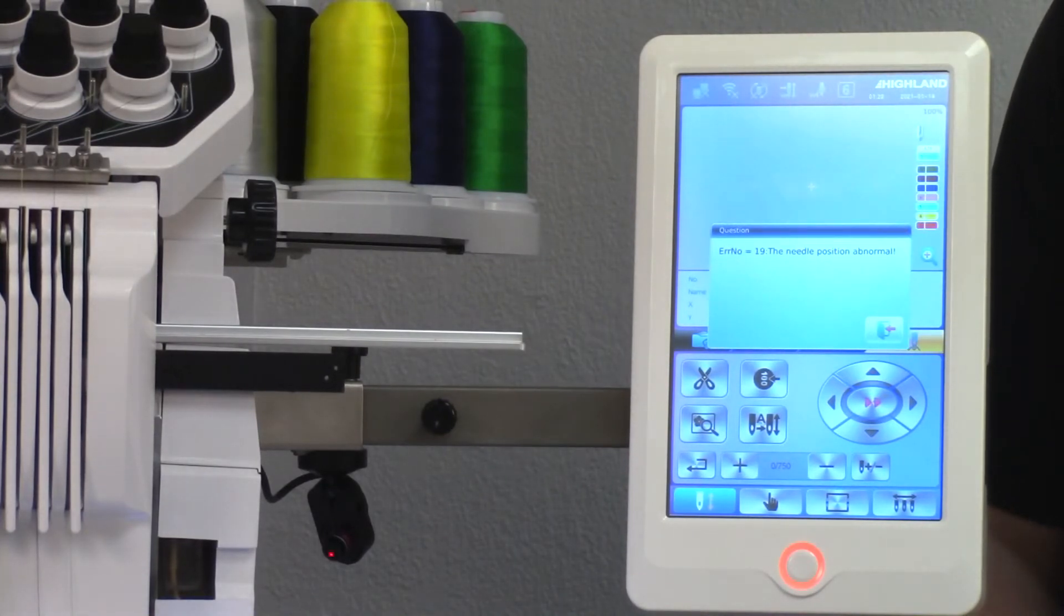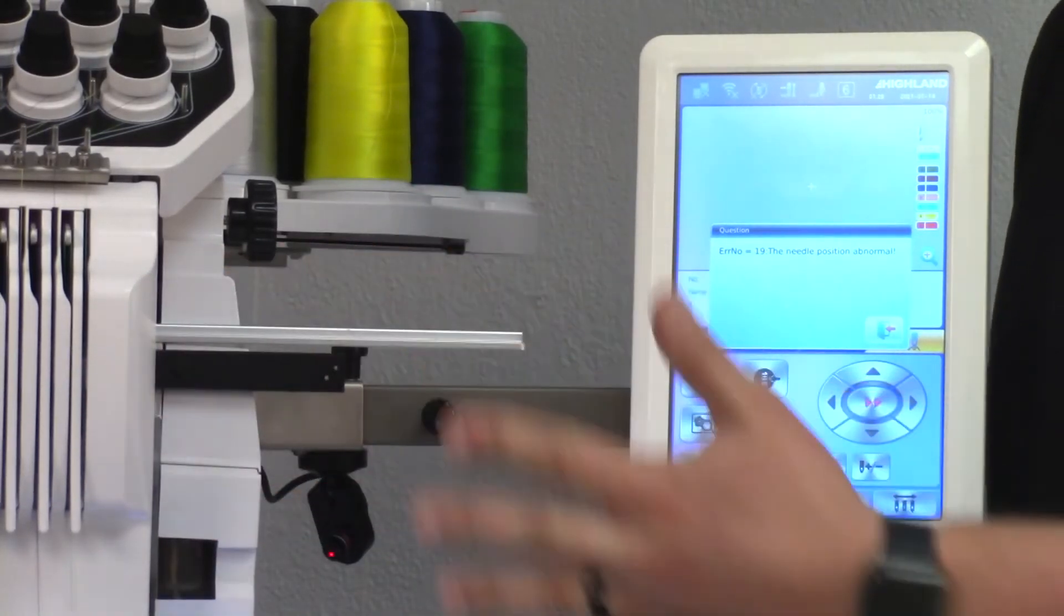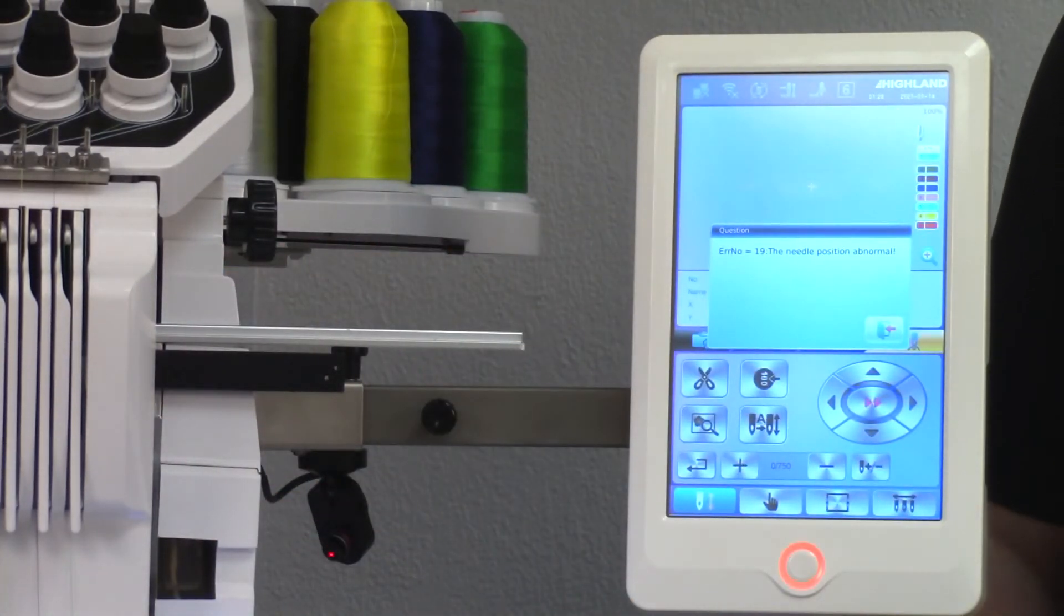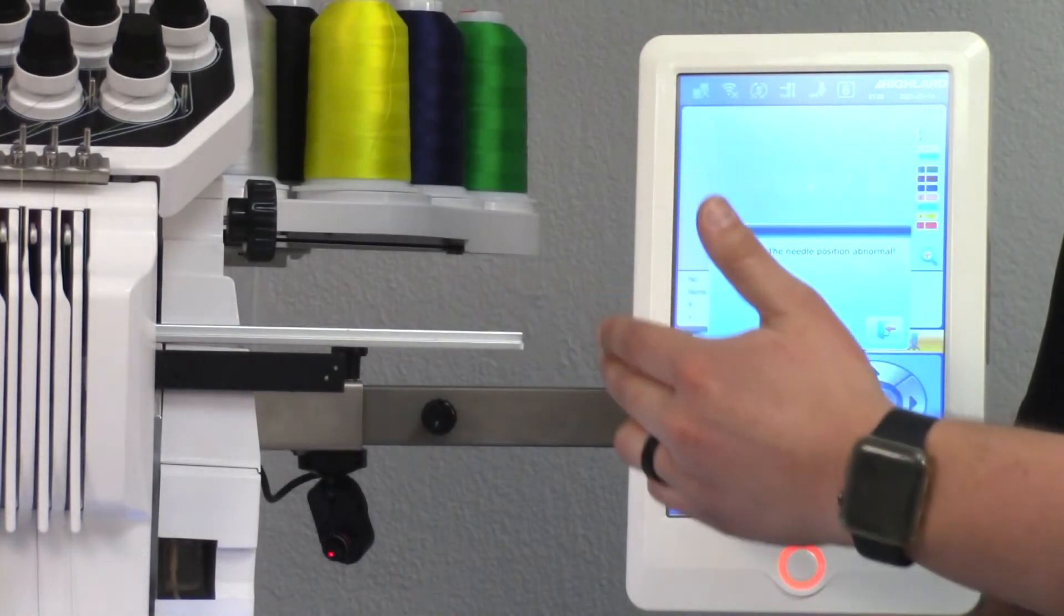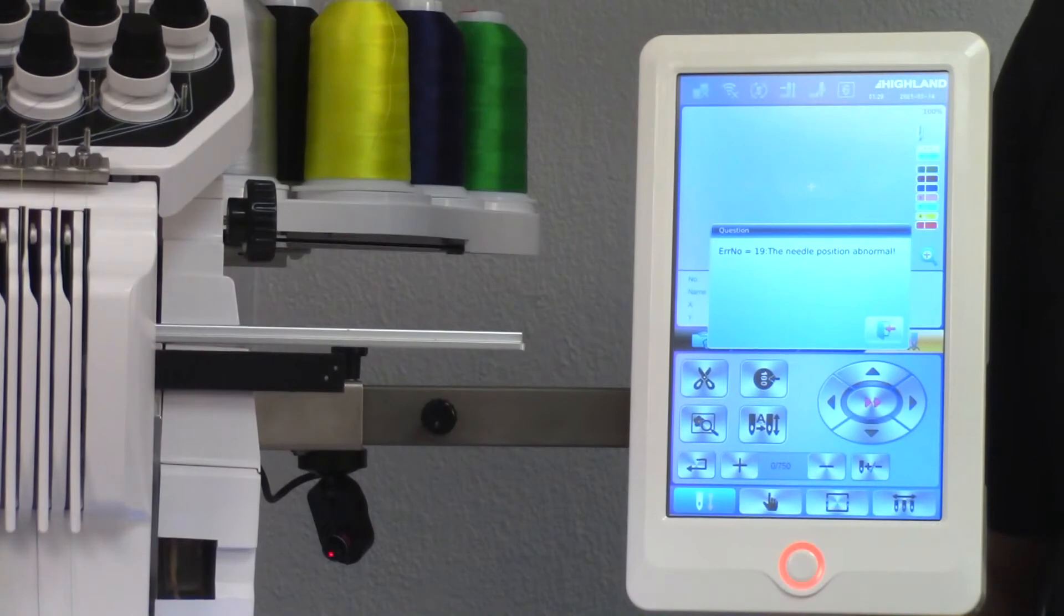What can cause this error message is if at any point the sewing head gets bumped while the machine is sitting idle. Or, if you're color changing over to needle number 15 and the sewing head runs into the control panel, it can cause your needle position to be knocked off and therefore be abnormal and cause this error message.